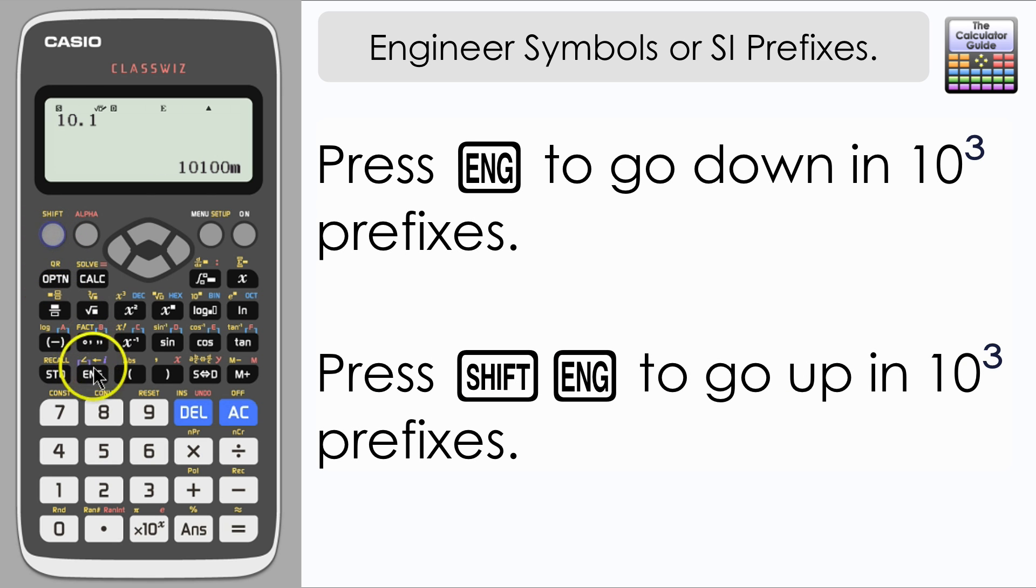We can go back to where we started from, 10.1, we can now go to greater scale. So we've got 0.0101 kilowatts, and if we go again, we'll go up by a factor of 10 to the power of 3.